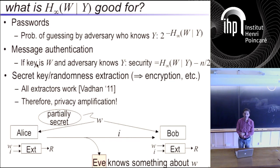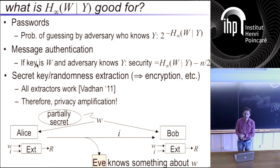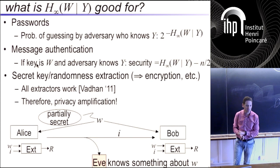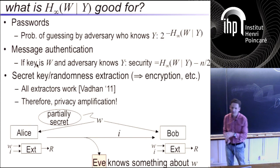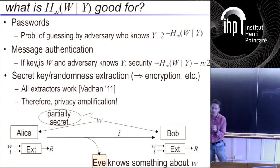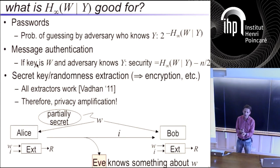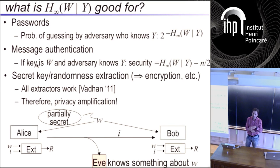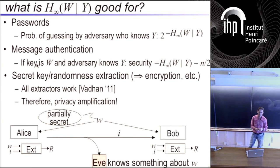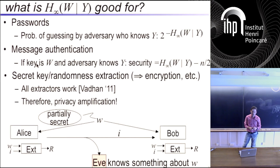For the leftover hash lemma it's exactly the same parameters. All extractors — if you're agnostic to which extractor you're using — you lose either three bits or a factor of three in epsilon, something stupidly small. A strong extractor.